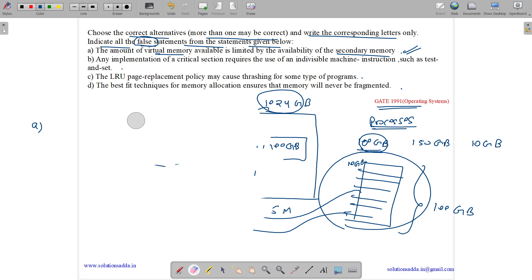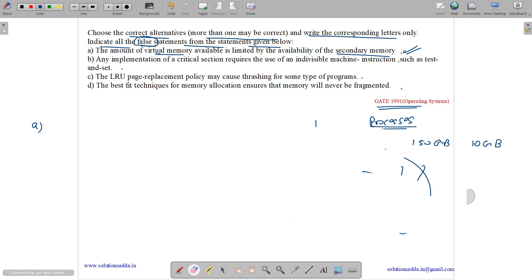Now let us see option B. What option B states. So option B says any implementation of critical section requires the use of indivisible machine instructions such as test and set. So we have certain approaches for critical section. First are hardware based approaches that require support from the hardware. And the second one are software based.